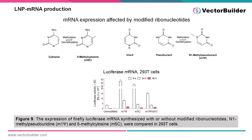Another thing to take into consideration for your IVT reaction is whether modified nucleotides should be included. Two popular choices include 5-methylcytosine and N1-methylpseudouridine. These nucleotides maintain proper Watson-Crick base pairing during translation, but help evade immune detection of RNA by the innate immune system, resulting in enhanced expression of certain transcripts in vivo and a reduced non-specific immune response.